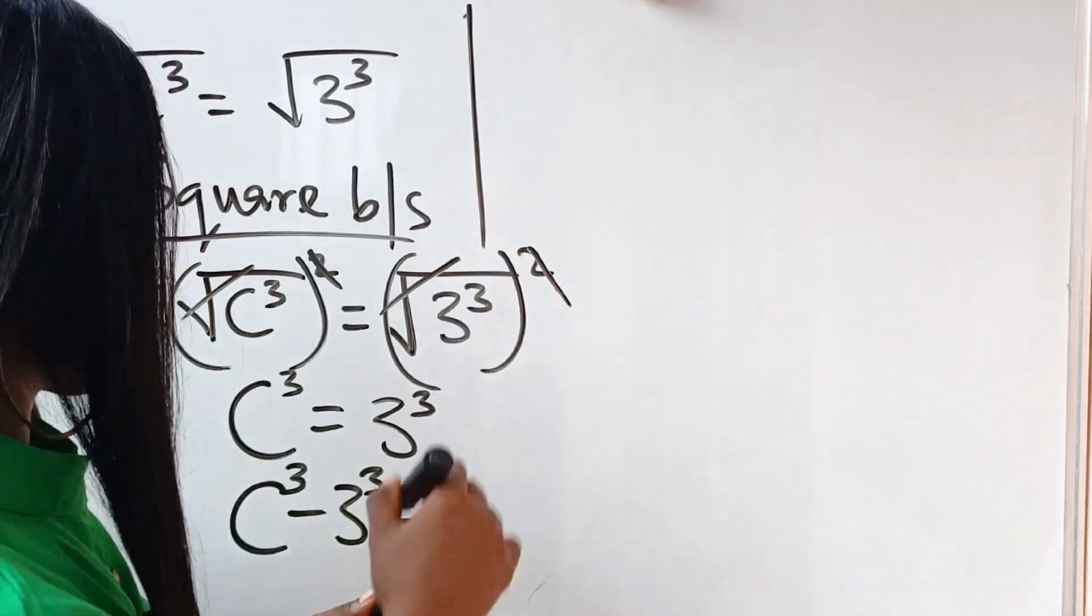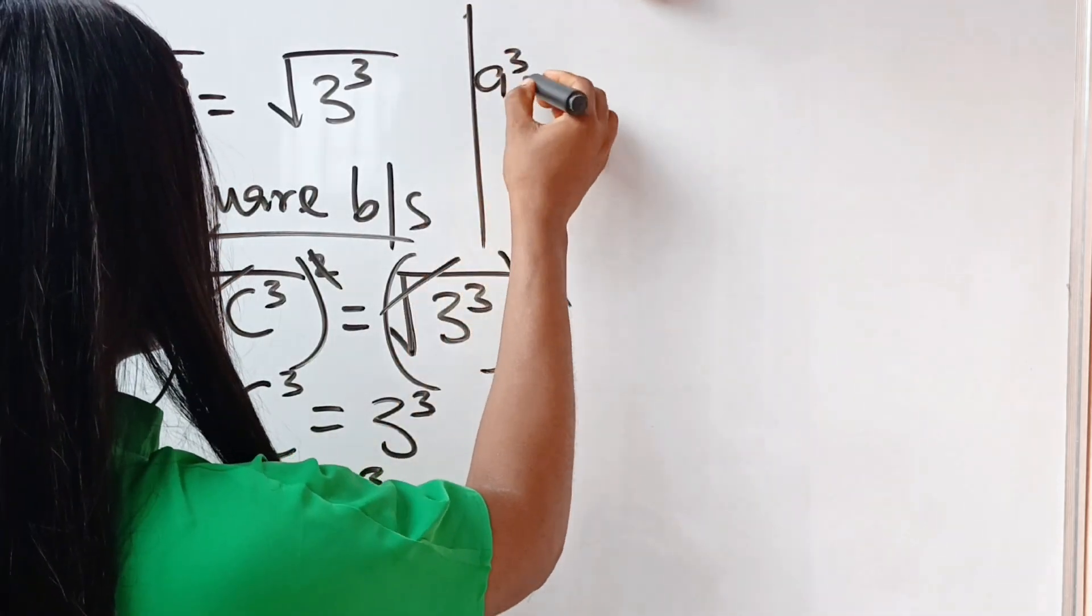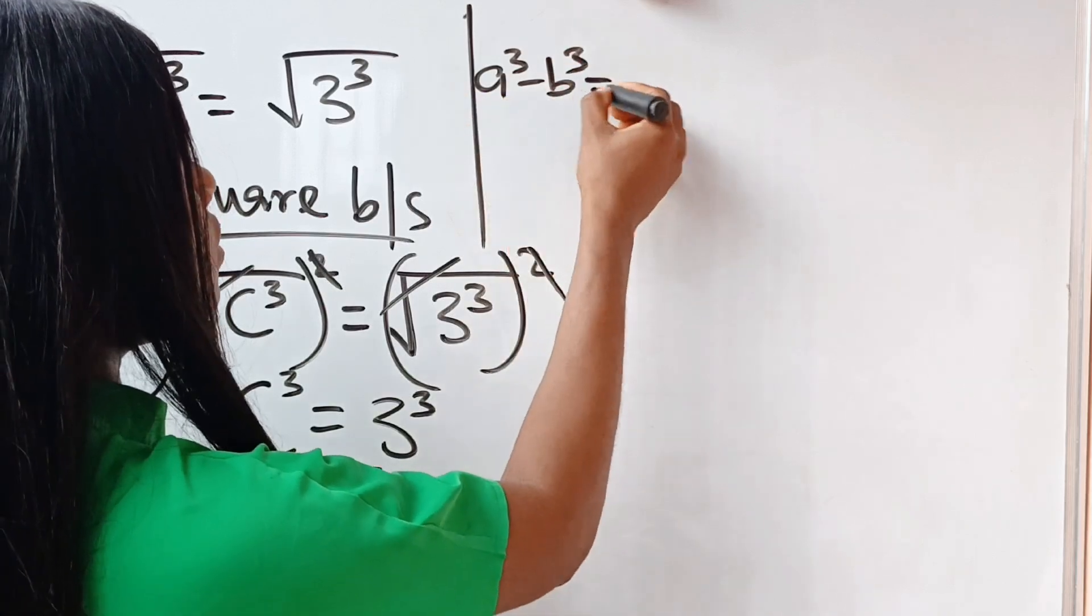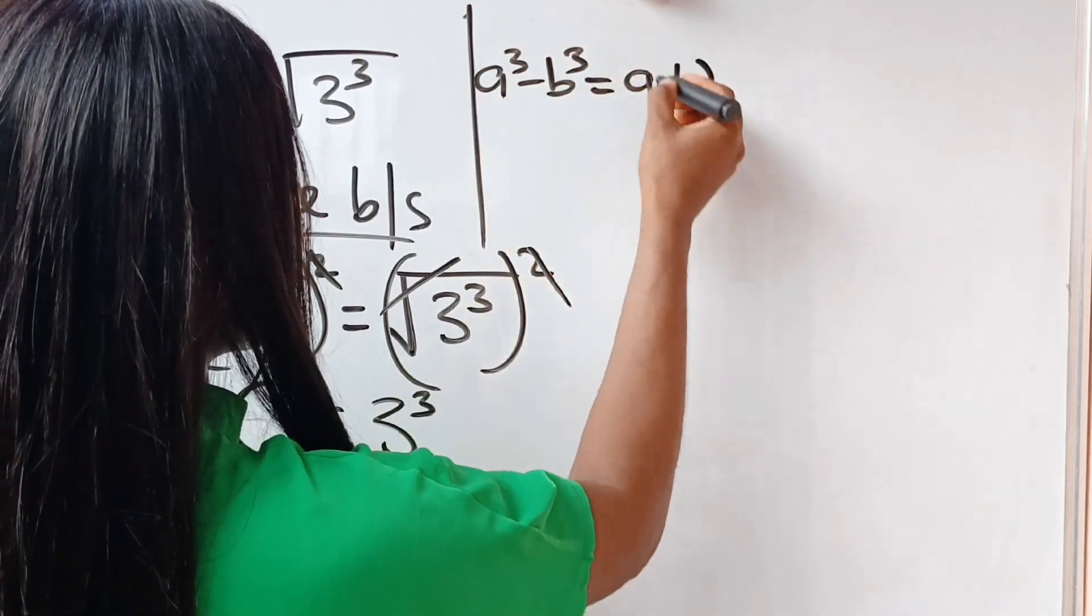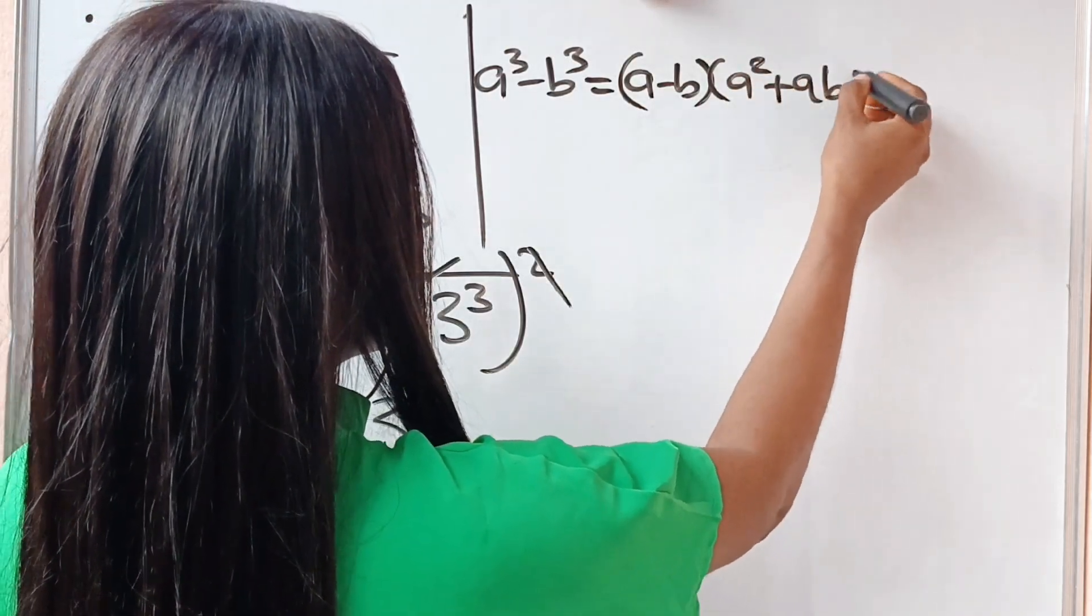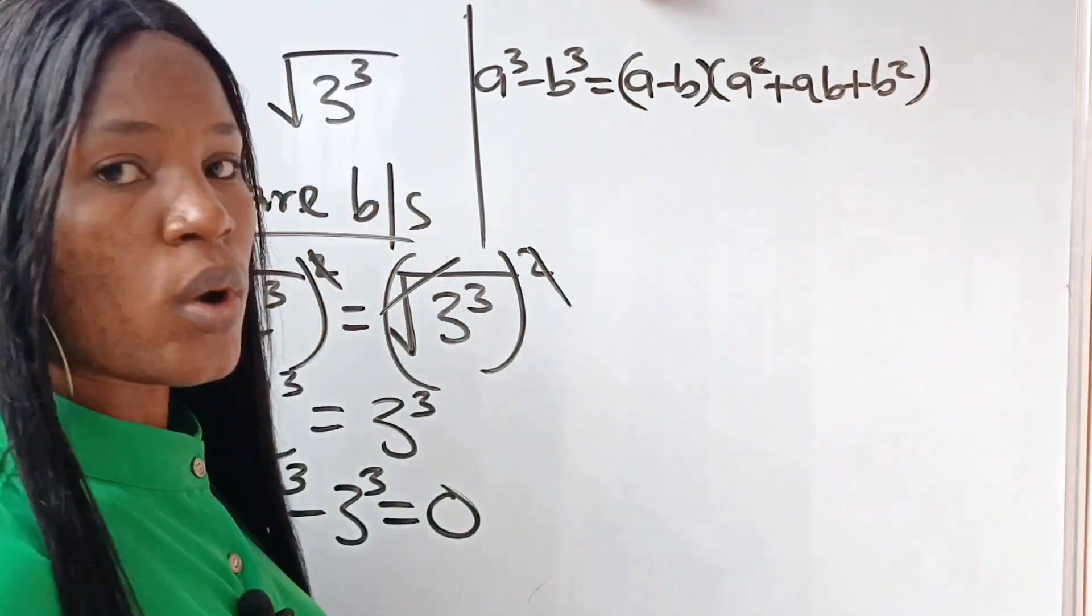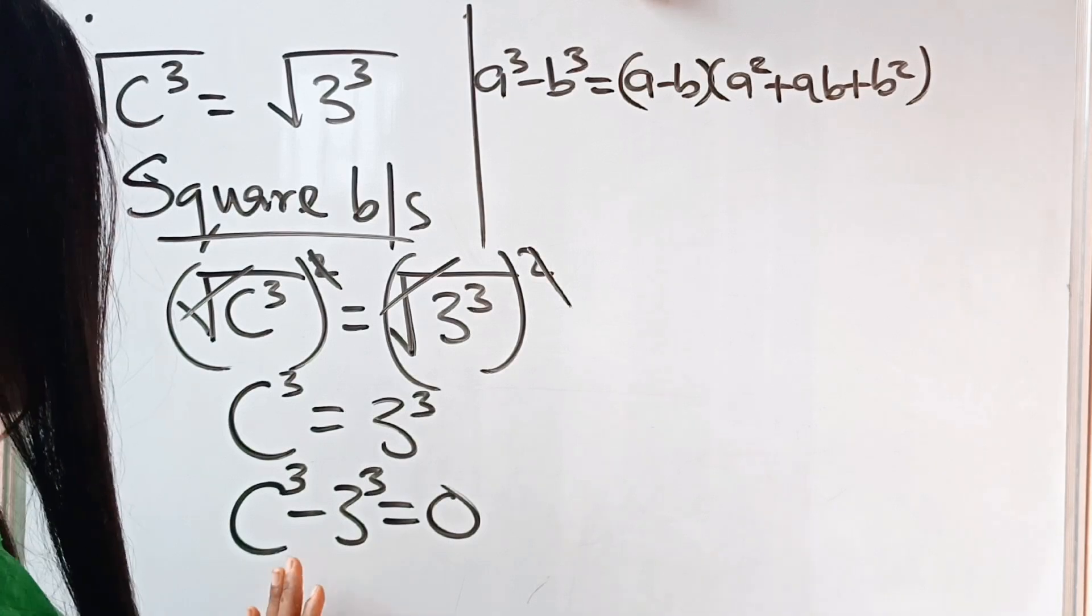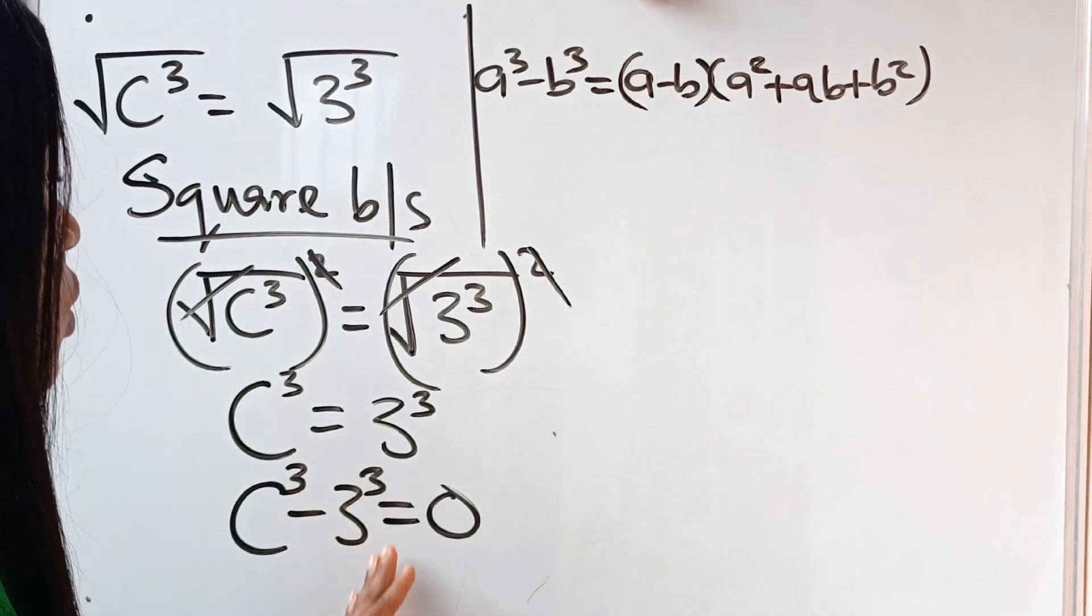Now remember this algebra identity that states that a to the power of 3 minus b to the power of 3 is equal to a minus b multiplied by a squared plus ab plus b squared.